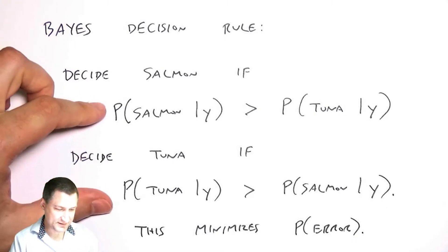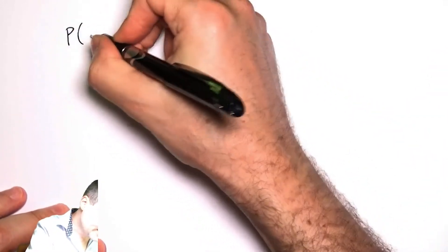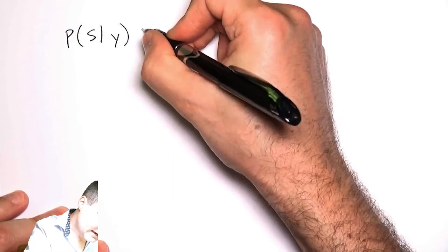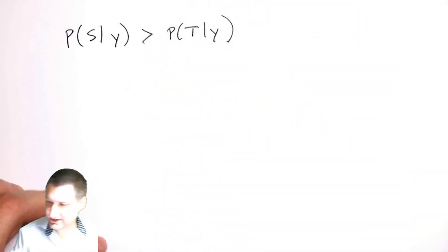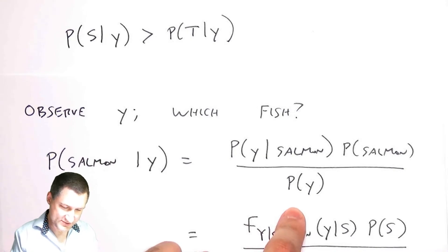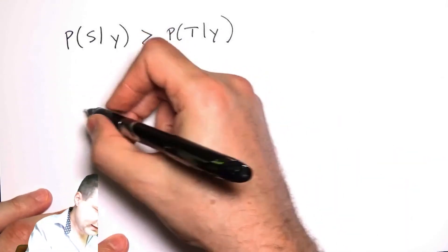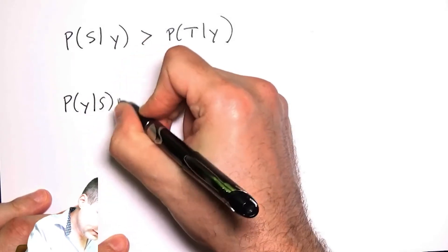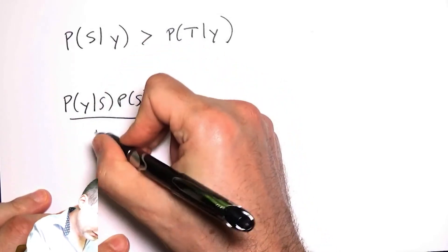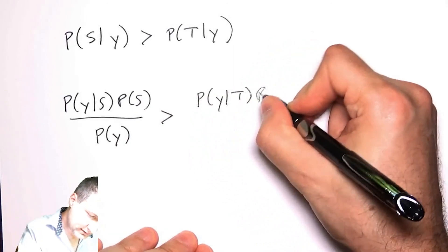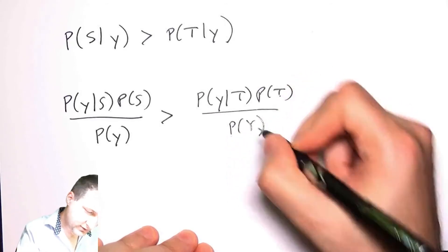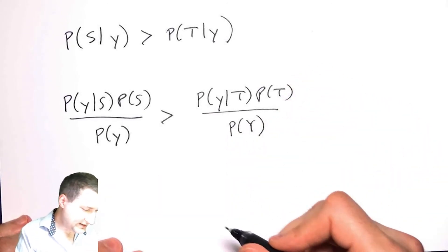Let me just write out what this means. The decision rule says I choose salmon if this is true. If I look back at what is that actual number, that's what this thing is. So I can write this out to say that's like saying I have to have probability of y given salmon times probability of salmon over probability of y greater than probability of y given tuna times probability of tuna over probability of y.